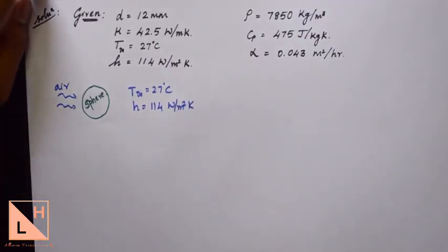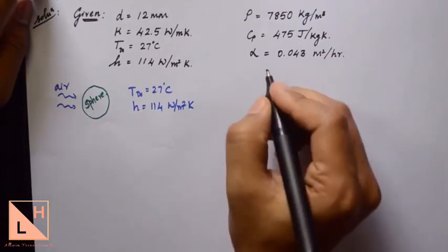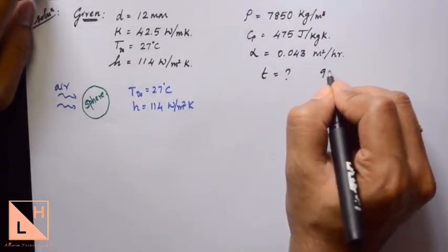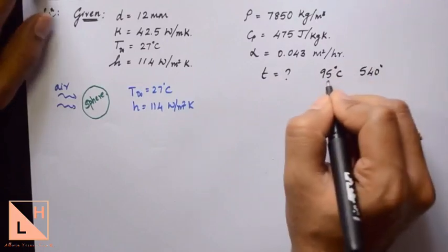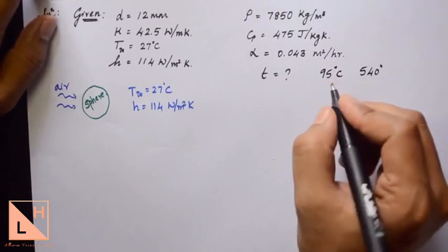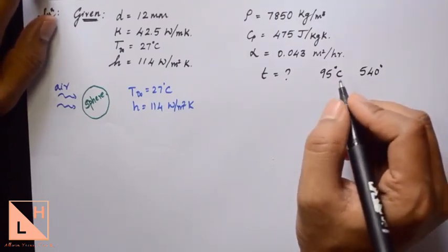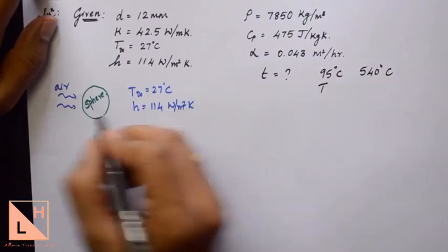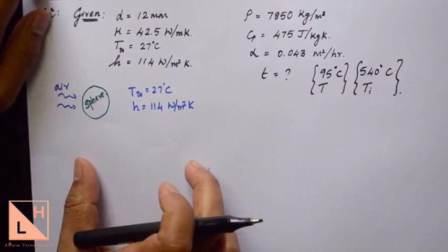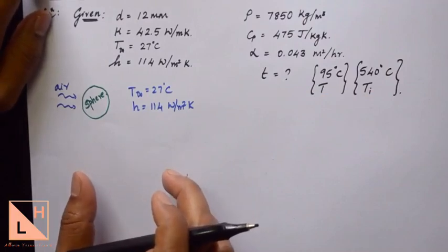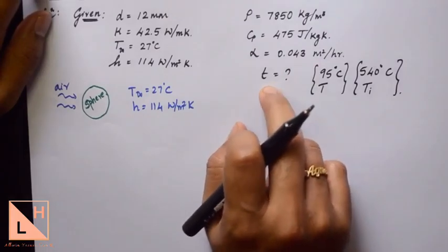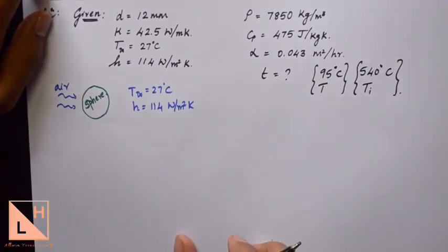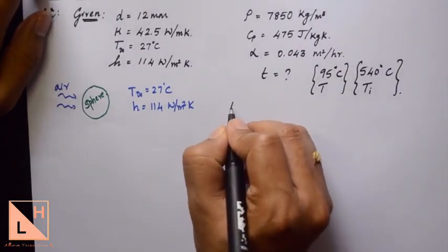According to the question we need to answer two sub-questions. The first asks us to find the time taken for the sphere to reach 95 degrees Celsius from 540 degrees Celsius. The 95 degrees Celsius is the temperature to be attained, T, and 540 degrees Celsius is the initial temperature Ti. We will consider transient heat conduction because temperature is varying with respect to time. First, let us check the Biot number to determine whether we can apply lumped analysis.